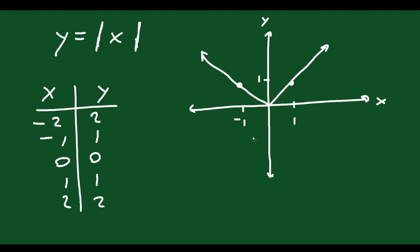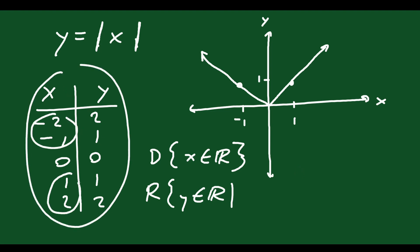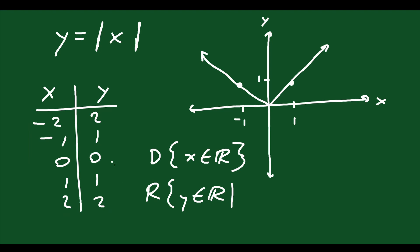This is a cool looking function. For the domain, you could say x belongs to the set of real numbers, because x can be anything — you can take the absolute value of any number, and the graph goes to the left forever and to the right forever. But what about the range? Looking at the table of values, whether you plug in a negative or positive, the answers you get are all positives. You don't get any negative y values — it's impossible. So we have to exclude all negative y values. Therefore, y exists in the set of real numbers such that y must be greater than or equal to zero.